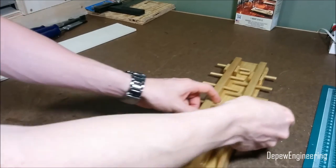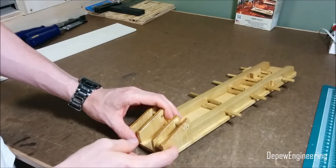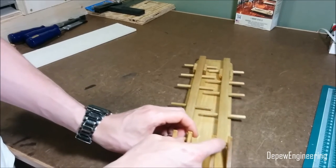And then what holds the angle of the pivot is the location of the two dowels down here. So this is the pivot dowel and this is the stop dowel.